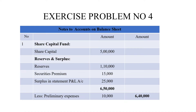Since preliminary expenses are a capital fund expense, we will deduct them from the profit and loss surplus. So we will pay less - the actual value of profit less 10,000 rupees for preliminary expenses. We are getting 6,40,000 rupees as shareholders' fund.